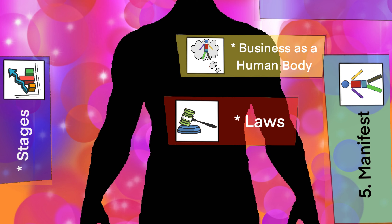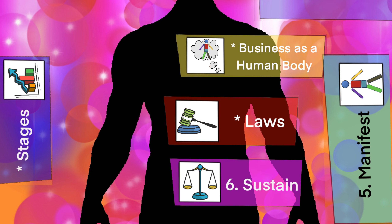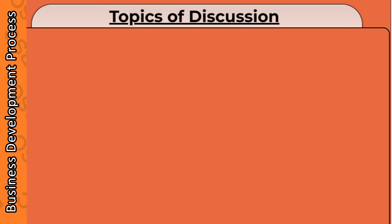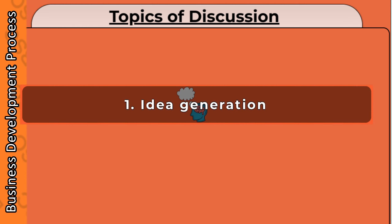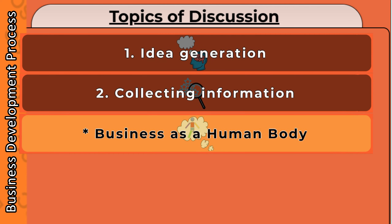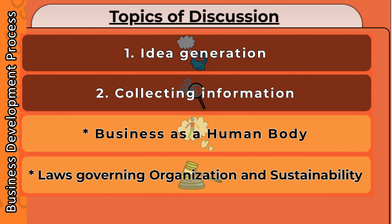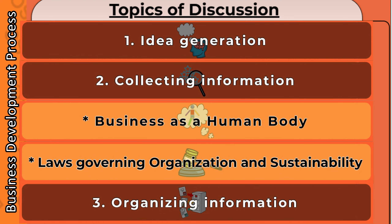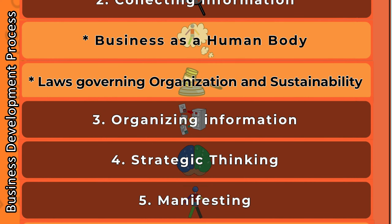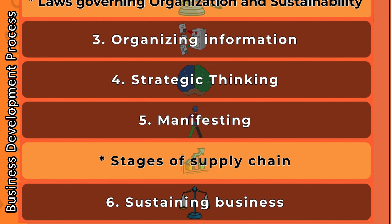This content is only for entertainment purposes. Finally, we must sustain our business so that we ensure that our business has a long and prosperous life. So these are the topics that will be discussed by Brilliant Supply Chain in future videos: Idea generation, Collecting information, Business as a human body, Laws governing organization and sustainability, Organizing information into strategies, Strategic thinking, Manifesting, Stages of supply chain, Sustaining business.